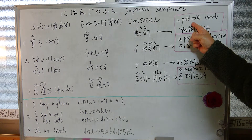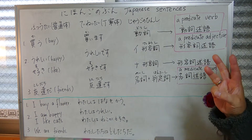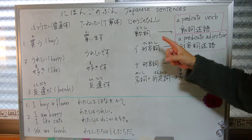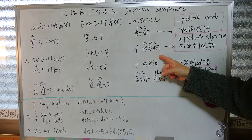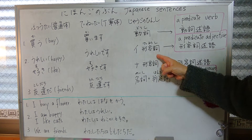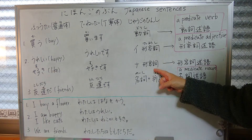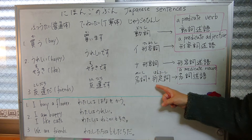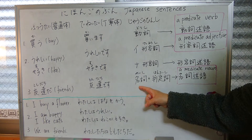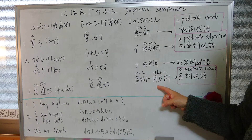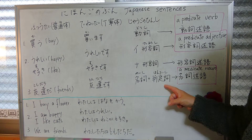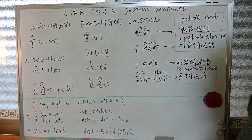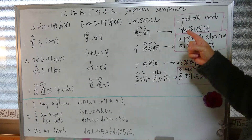Okay, we have three kinds of predicate. Number one: doushi — verb. Number two: adjective — we have two adjectives: ii keiyoshi and na keiyoshi. And number three: meishi plus hanteishi — noun plus a judgment word. Also in Japanese, a sentence can be formed with only a predicate.